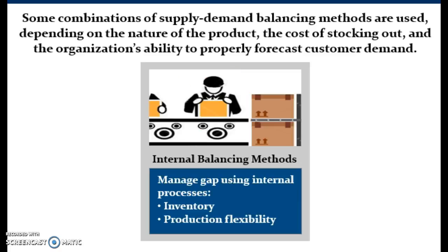Internal balancing methods utilize an organization's internal processes to manage the supply-demand gap. Production flexibility allows an organization to quickly and efficiently change its production lines from one product to another. The trade-off is between production changeover costs and safety stock costs. Inventory is probably the most common and most expensive method to manage the imbalance between supply and demand. Many organizations produce product to a forecast that includes safety stock to smooth the effects of demand and lead time variability. In today's business environment, volatility in demand has become the norm.